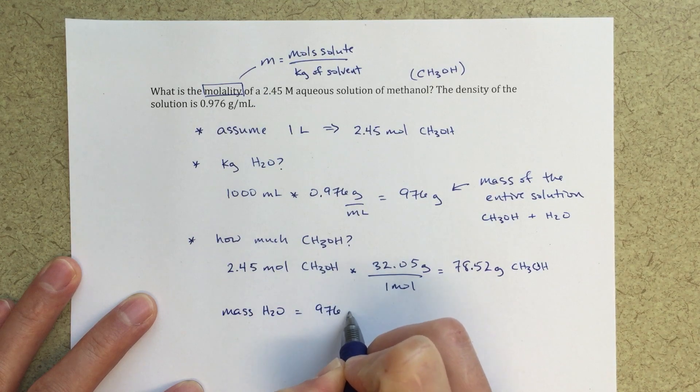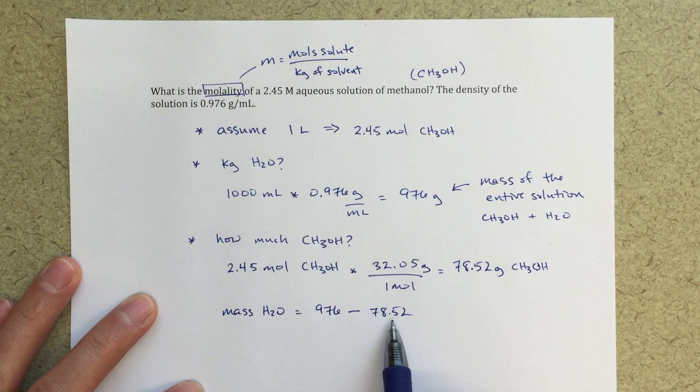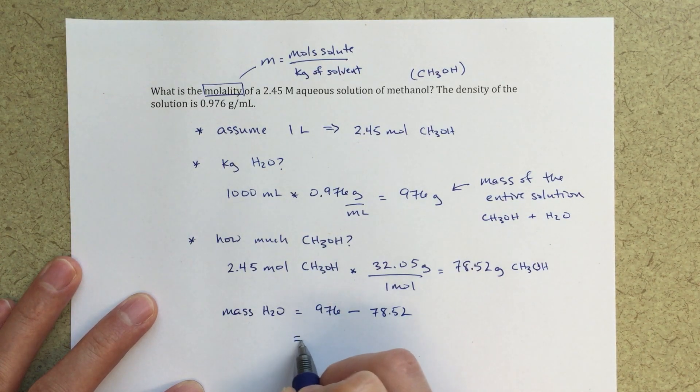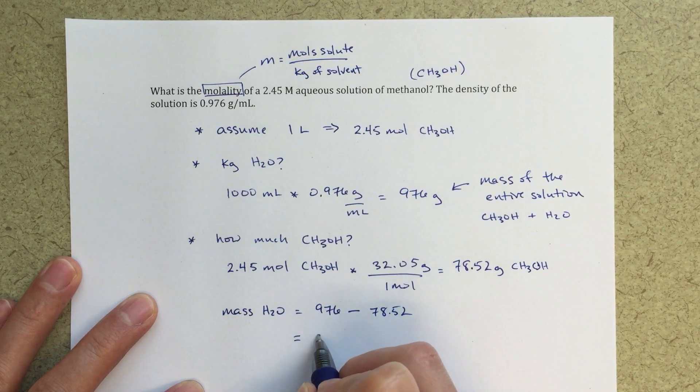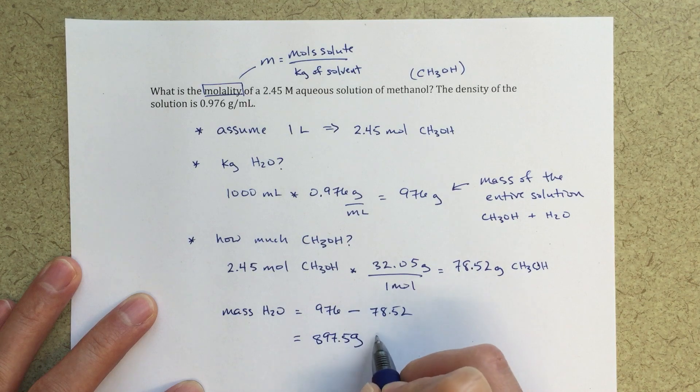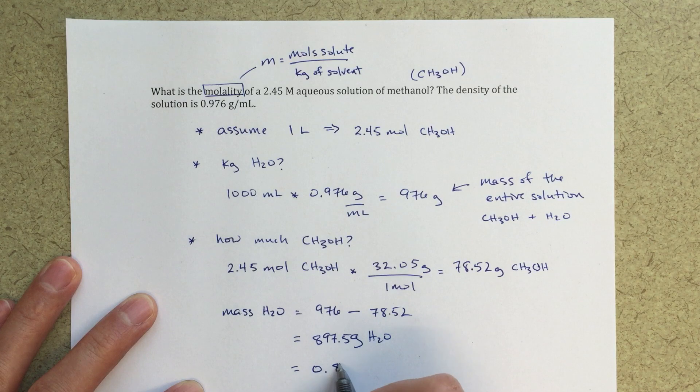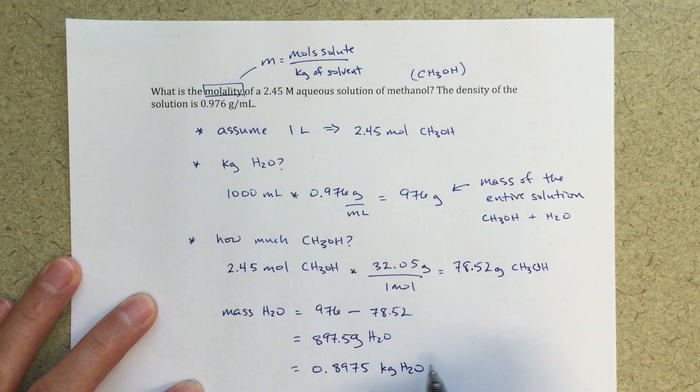976 minus 78.52, so I'm subtracting the mass of the methanol away from my total mass. That's going to give me my mass of just water, and that's going to be 897.5 grams of H2O, and then I'm going to want to convert that to kilograms: 0.8975 kilograms of H2O.